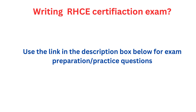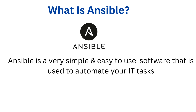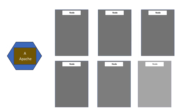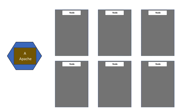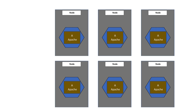Let's get started. What is Ansible? Ansible is a software, a very simple and easy-to-use software, that is used to automate and orchestrate IT tasks. A straightforward illustration of this concept is this: imagine you need to install and configure the Apache web server on 10 different nodes. By the use of Ansible, you can automate this process across all 10 nodes simultaneously, eliminating the need to manually install and configure Apache on each node one at a time, streamlining the deployment process and saving considerable time and effort.